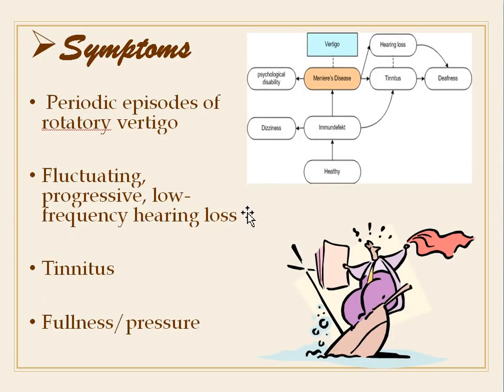The symptoms are easy to remember using the mnemonic DVT: D for deafness, V for vertigo, and T for tinnitus. The symptoms include periodic episodes of rotatory vertigo, fluctuating progressive low-frequency hearing loss, and tinnitus or fullness and pressure.